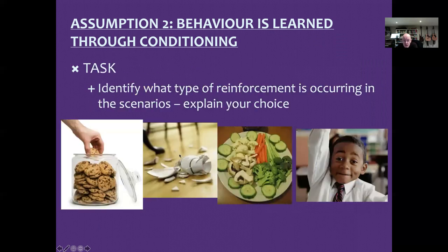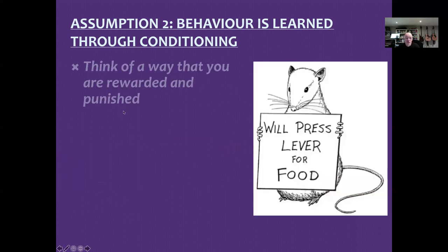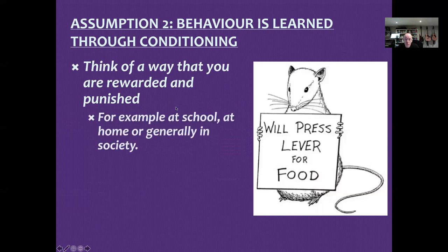Your next task is to look at the four examples on screen — you can pause the video to write them down — and identify which types of reinforcement are going on, then write them in your handout. You might also want to think of ways you've been rewarded or punished yourself. Think about reinforcements and punishments that take place at school, at home, or generally in society — we are punished for doing things wrong in social contexts.